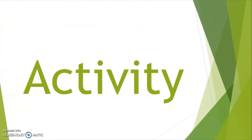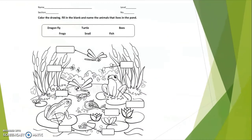The activity for today is: color the drawing, fill in the blank, and name the animals that live in the pond. We have six choices and you need to write the answer inside the box where the arrow points.